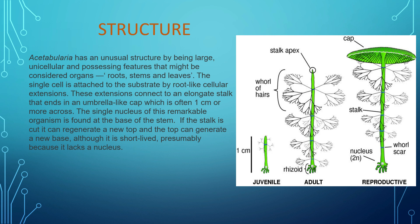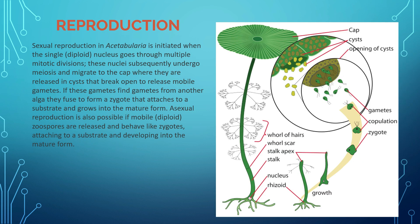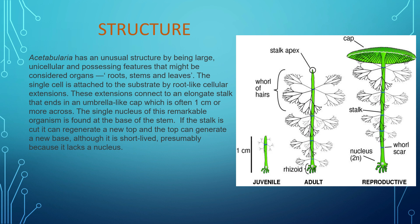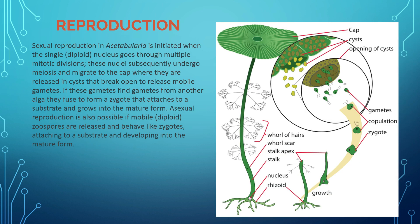Acetabularia has only one nucleus, present at the base of the stem. If the stalk is cut by physical means or any other damage, it can regenerate a new top, and the top can regenerate a new base. Simultaneously, a new organism will be generated, although it is short-lived because it lacks a nucleus. The picture shows the structure at juvenile, adult, and reproductive stages.